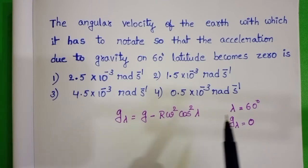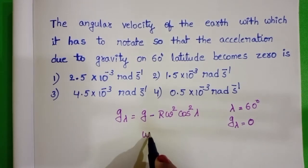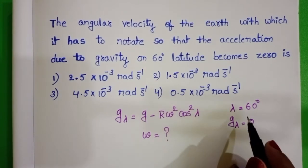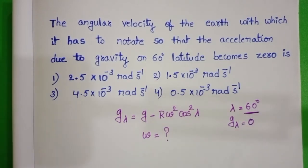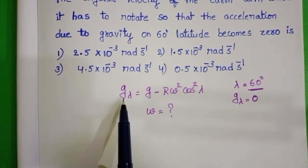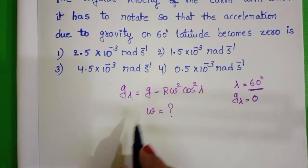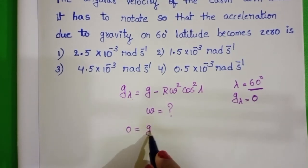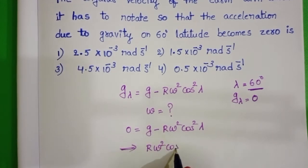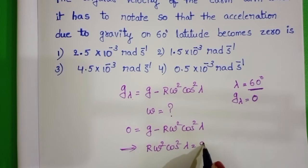We have to find out the angular velocity of the earth at 60 degree latitude angle. From this formula, in place of g lambda, substitute 0. From this, r omega square cos square lambda equals to g.